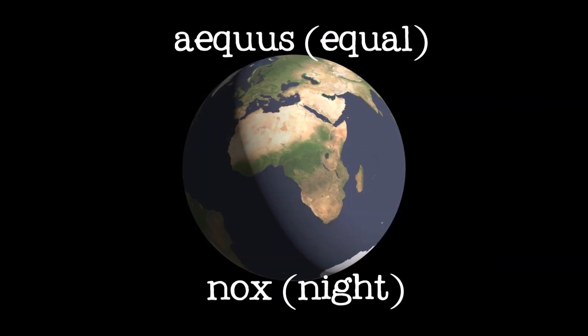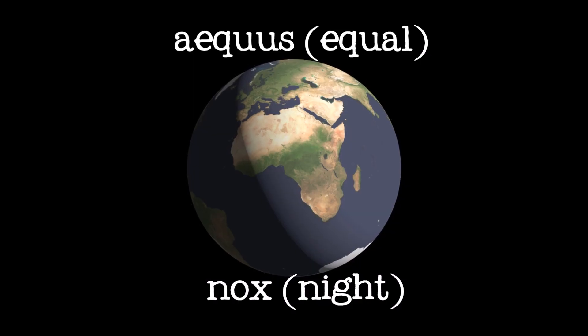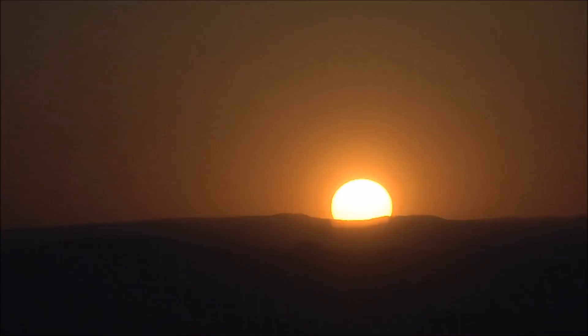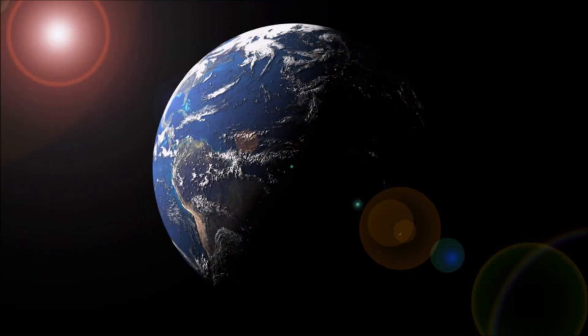The word equinox comes from two Latin words that mean equal and night. During an equinox, the length of the day and the length of the night are approximately the same, about 12 hours each.